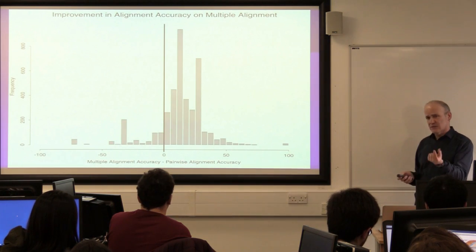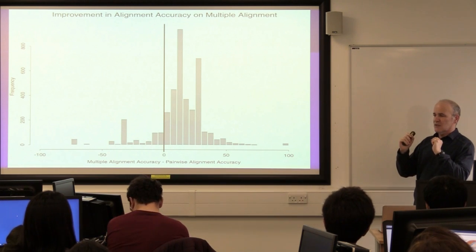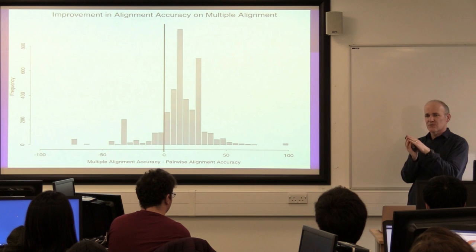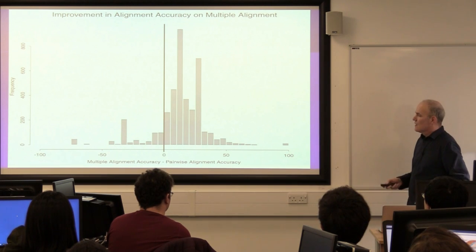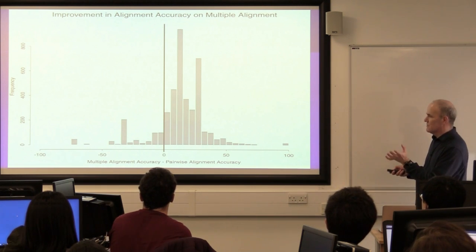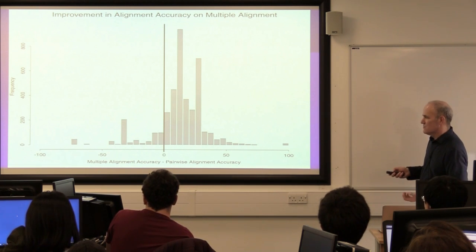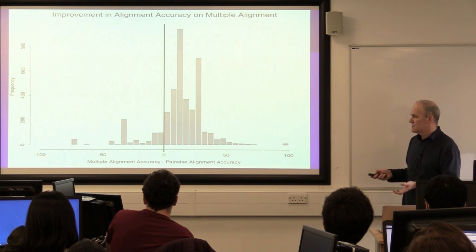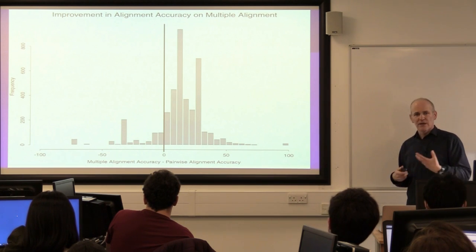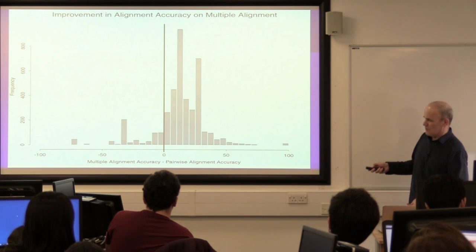Alignment accuracy does improve with multiple alignment. To illustrate this: if you align two sequences pairwise and look at the accuracy, versus aligning those same two sequences as part of a multiple alignment of the family, you can plot the difference in accuracy as a histogram. Numbers to the right of zero are where the multiple alignment is more accurate than pairwise, and numbers to the left are where it's less accurate. You can see there are more examples of alignments that are better when you multiply align than those that get worse.